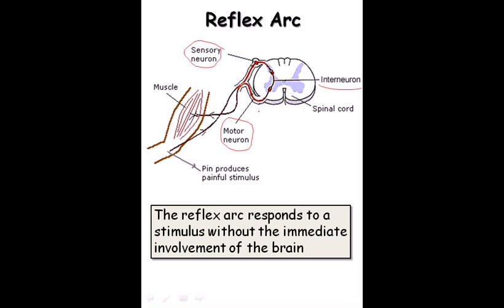The interneuron modifies the signal and sends it to the motor neuron. Motor neurons are attached to muscle cells — for example, your hand muscles. When you receive the heat signal, it tells your motor neuron to remove your hand very fast. Another example is a pin as a painful stimulus: the sensory neuron sends the signal through the interneuron to the motor neuron, and your hand is quickly withdrawn. It is very fast and very quick.